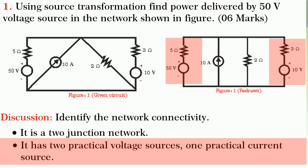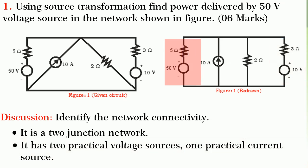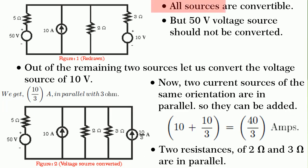You see that it has two practical voltage sources, one of 50 volts in series with 5 ohm and another of 10 volts in series with 3 ohm. It also has one practical current source of 10 ampere with 2 ohm in parallel. Now, you must understand that all the three sources are convertible. But which source is to be transformed?